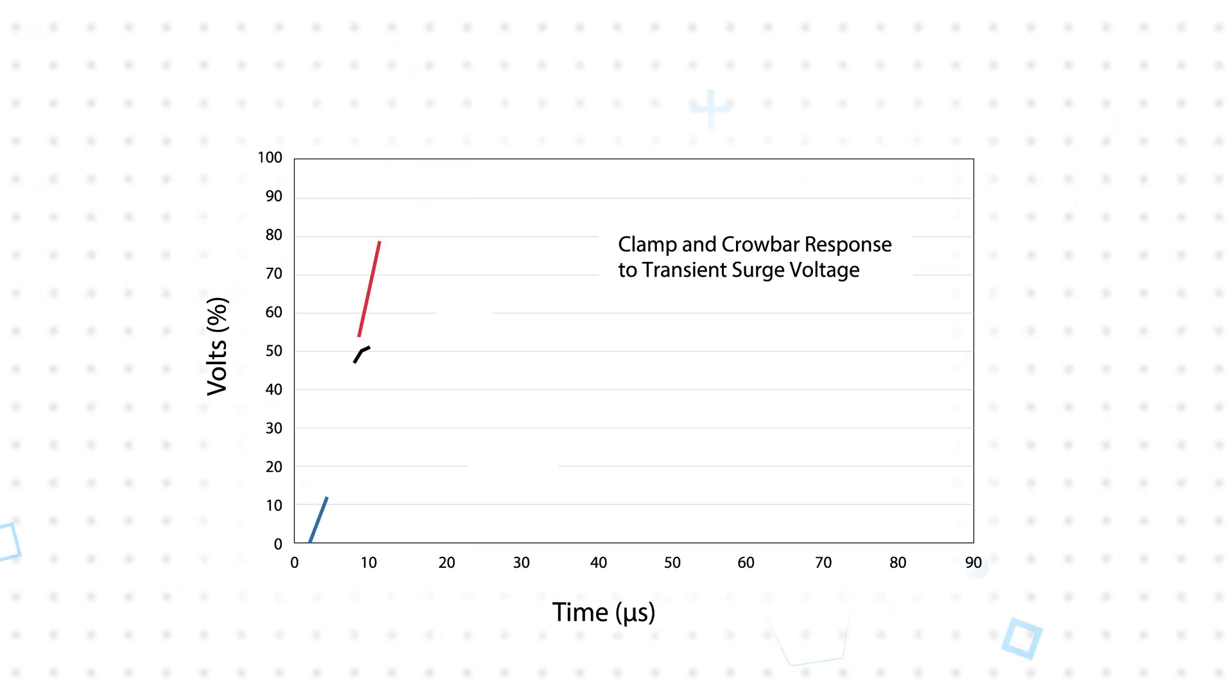Contrast this with a device that uses a crowbar mechanism, which significantly drops the voltage to protect the circuit, but it drops to such a low level that it interrupts the normal operation of the circuit.